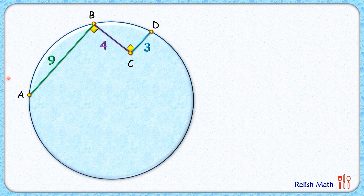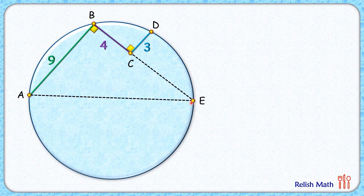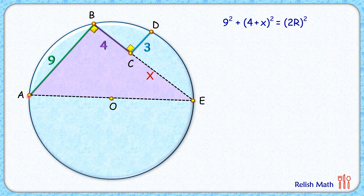For our first solution, let's extend BC to meet the circle at point E, and join AE. AE is subtending an angle of 90 degrees at the circumference, thus AE is the diameter of the circle, passing through the center. Let's assume CE length is x cm. In triangle ABC, applying the Pythagorean theorem, we get 9² + (4 + x)² = AE² = (2R)².